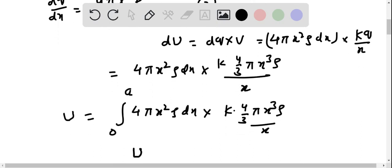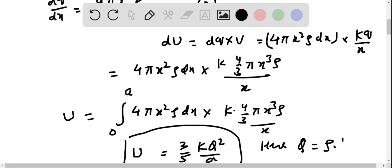Simplifying it, integrating for the limit 0 to a, you will get 3 by 5 k q square by a. Here value of q will be rho into 4 by 3 pi a cube.